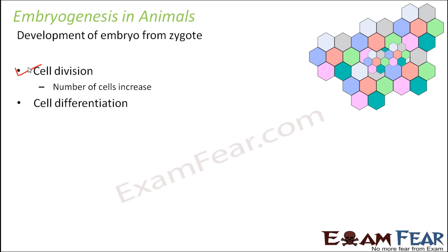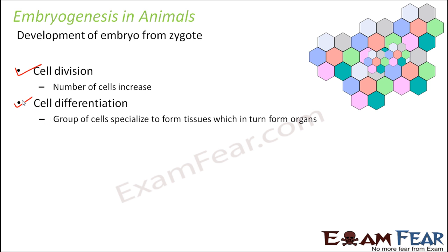For example, some cells aggregate together and decide to perform a specific function — they form the tissues which make up the heart. Similarly, other tissues join together and make up the lungs, and that is how all different organs are formed. So cell differentiation is equally important as cell division. In cell differentiation, groups of cells specialize to form tissues which in turn form organs. As a result of these two processes — cell division and cell differentiation — the zygote gradually develops into an embryo. This process is known as embryogenesis.